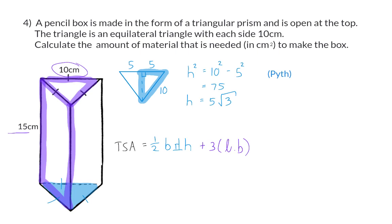Now we can go and substitute. For the triangle, we have half multiplied by the base of 10, which is then multiplied by the perpendicular height, which is 5 square root 3. And as mentioned earlier, the dimensions of each rectangle will be a 10 by 15 rectangle. So the total surface area of the shape is 493.30 centimeters squared, which is then also the amount of material needed to make the box.